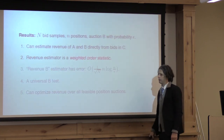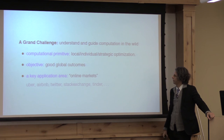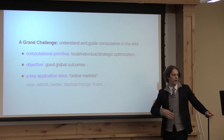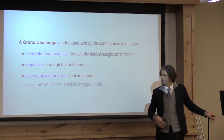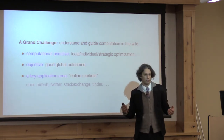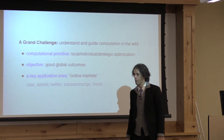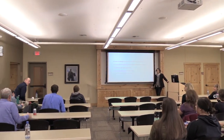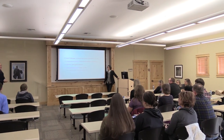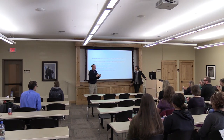So from the bids in auction C, I can directly give you the revenue of auction A and auction B using this weighted order statistic model. To conclude: from a computer science point of view, we're trying to understand how to get computations to work in the wild. In the wild, there's local optimization of individuals; if we can observe and understand what's driving that and make interventions to change the computations happening, we can get better outcomes in these systems. Thank you for your attention.